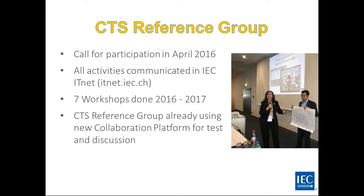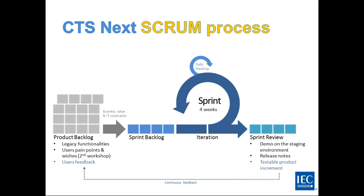We did seven workshops between 2016 and 2017 where we discussed various functions. We always had questions to the group — here you see two members discussing the user interface with a tile view to show what they would like to see and how they would like the tool to work. As soon as we had a minimal test version for the CTS reference group ready, they could already start using the tool for their discussions about it. The whole IT team also received an Agile training, because the process for developing this new collaboration tool is Agile.